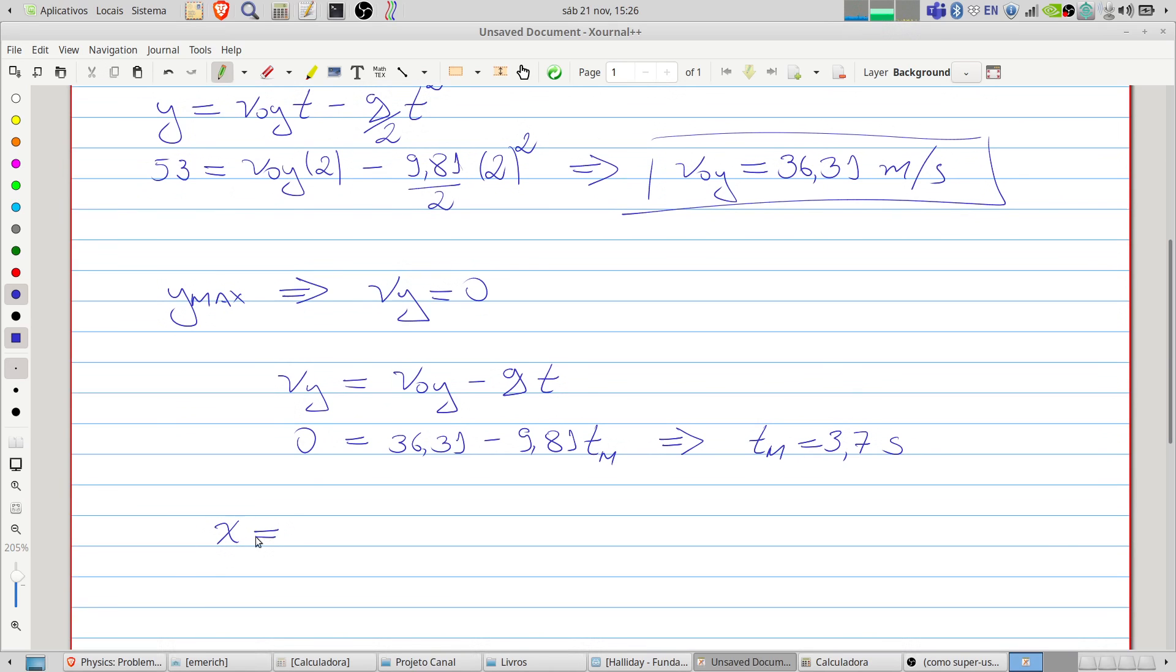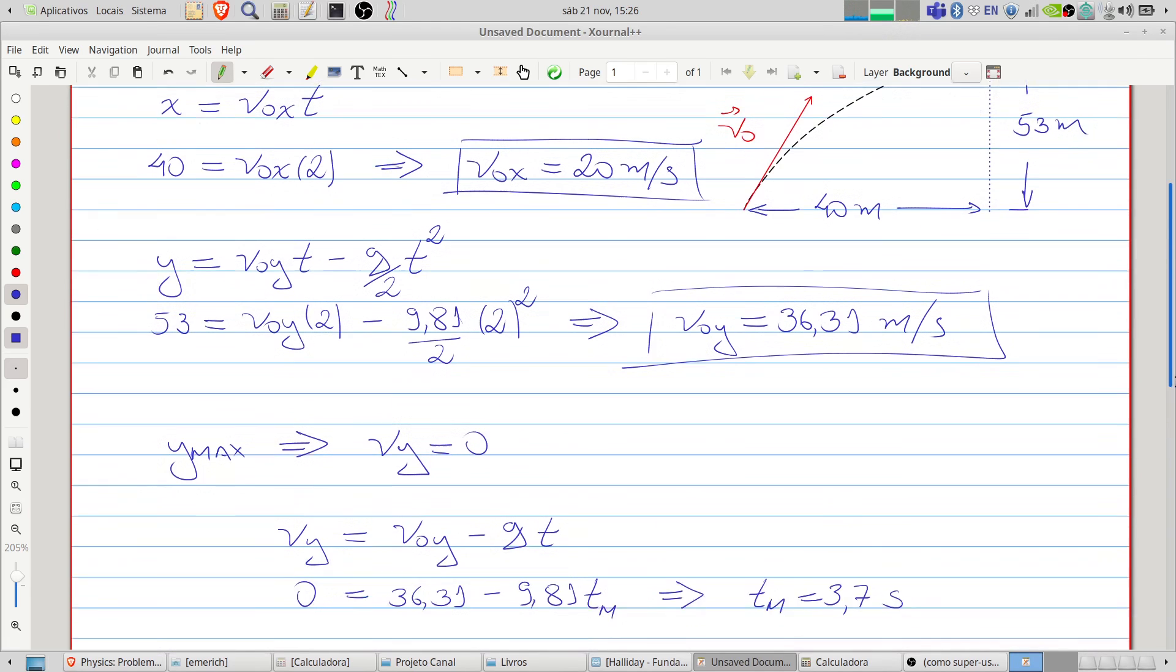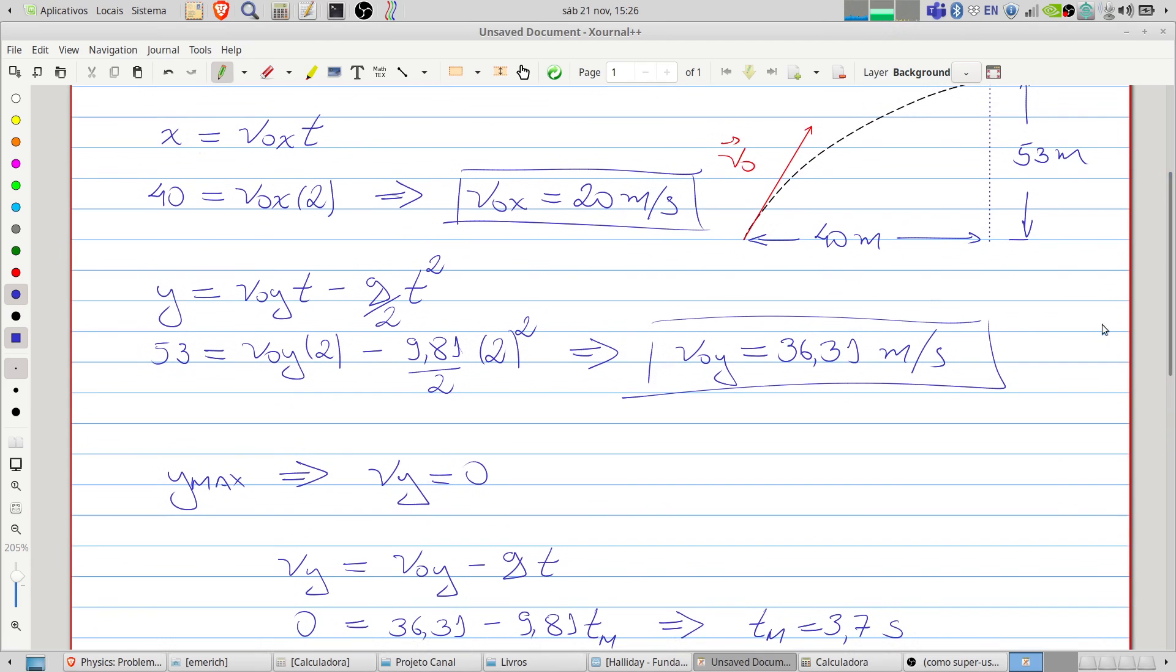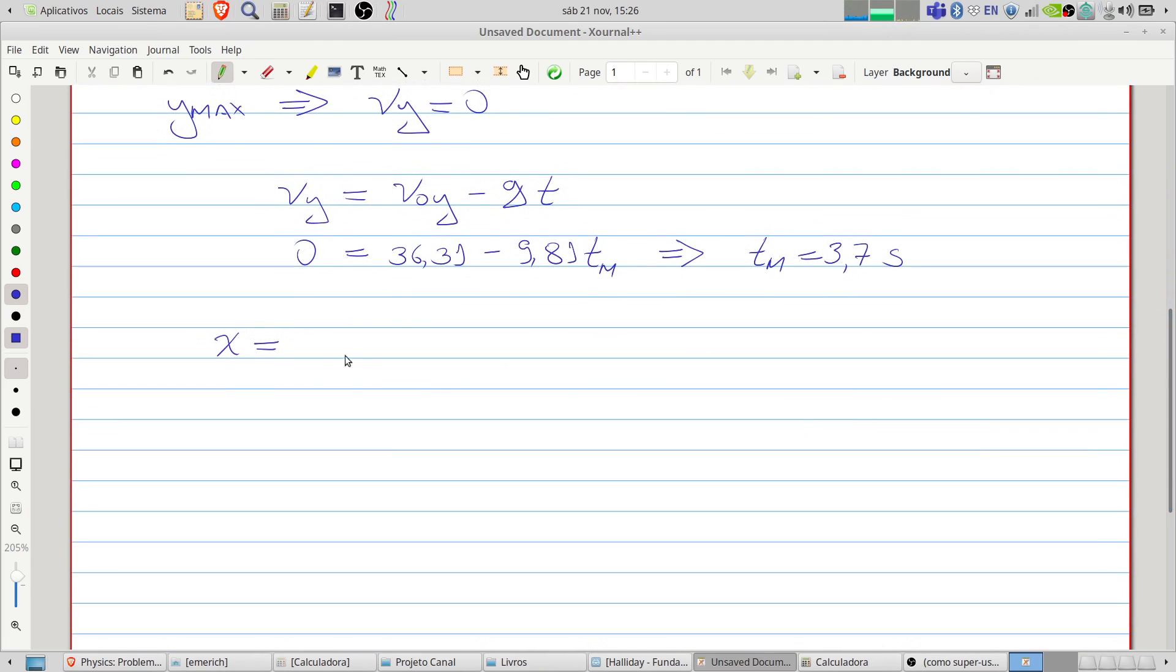x equals, we already used this equation, the initial velocity 20 times 3.7. So the displacement at maximum height will be x max.